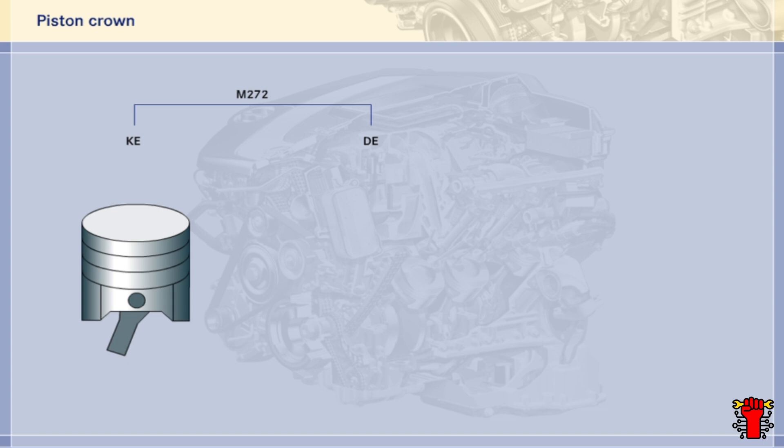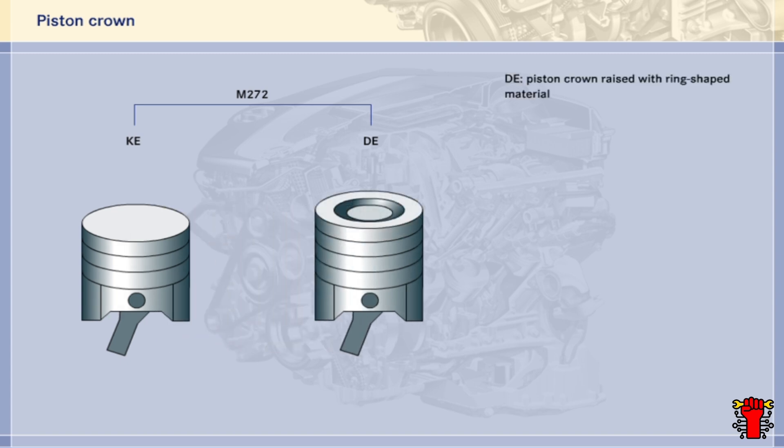Let's begin with the shape of the pistons. On the KE, the piston crown is flat. By comparison, the piston crown on the DE has been raised by the addition of ring-shaped material. The additional material makes the combustion chamber smaller and consequently increases compression.